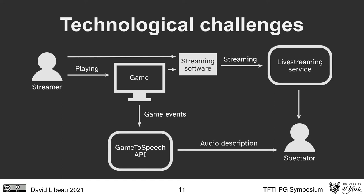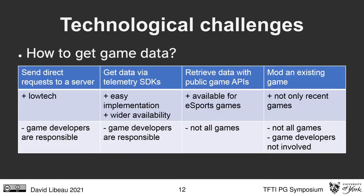I identified four main ways to get game data. The first solution involves sending direct requests to a server — a low-tech solution where a piece of code is added to the game that sends web requests. Here, game developers are responsible; they need to be in the loop, and if they don't want to spend time on this accessibility feature, researchers and players cannot do a thing.